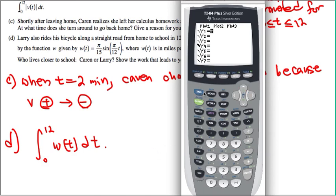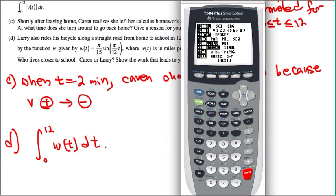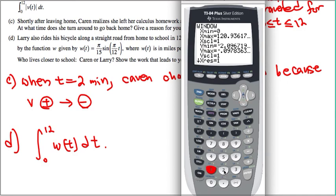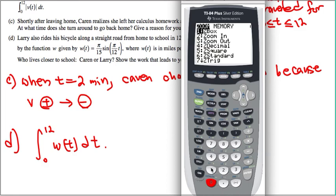We have pi over 15, and then sine of pi over 12, and then put down x. Making sure that the mode is in radians. All right. And the window which we are looking at is 0 through 12, so I'm going to put the window 0 through 12. And I'm going to go for zoom fit, zoom number 0.